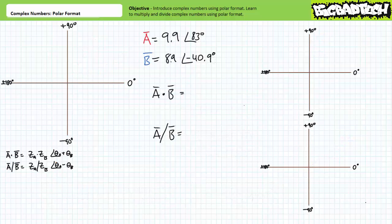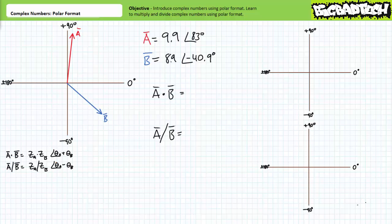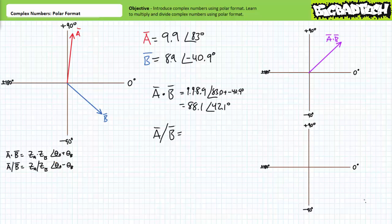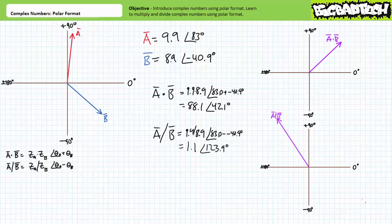Let's try a couple more illustrated examples of multiplication and division using complex numbers expressed in polar format. Consider complex number A with a magnitude of 9.9 at an angle of 83 degrees — A is in the first quadrant. Complex number B has a magnitude of 8.9 at an angle of negative 40.9 degrees — B is inside the fourth quadrant. When we multiply A times B, we multiply the magnitudes and add the angles to obtain 88.1 at an angle of positive 42.1 degrees. Dividing A by B, we divide the magnitudes and subtract the angles to obtain 1.1 at an angle of 123.9 degrees.